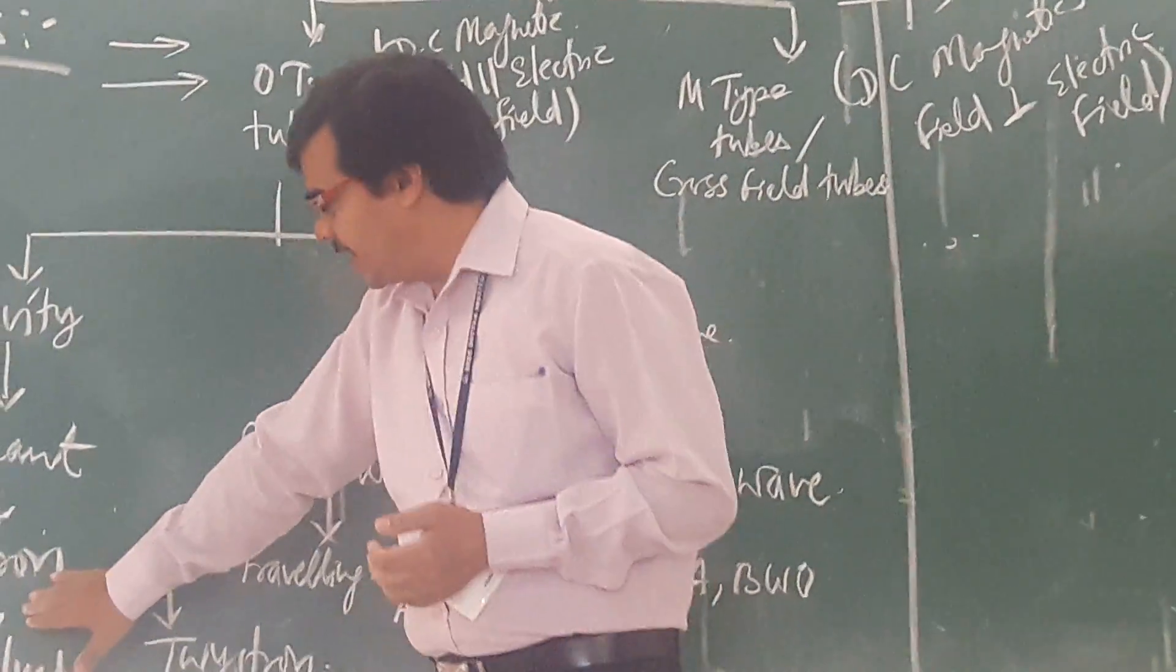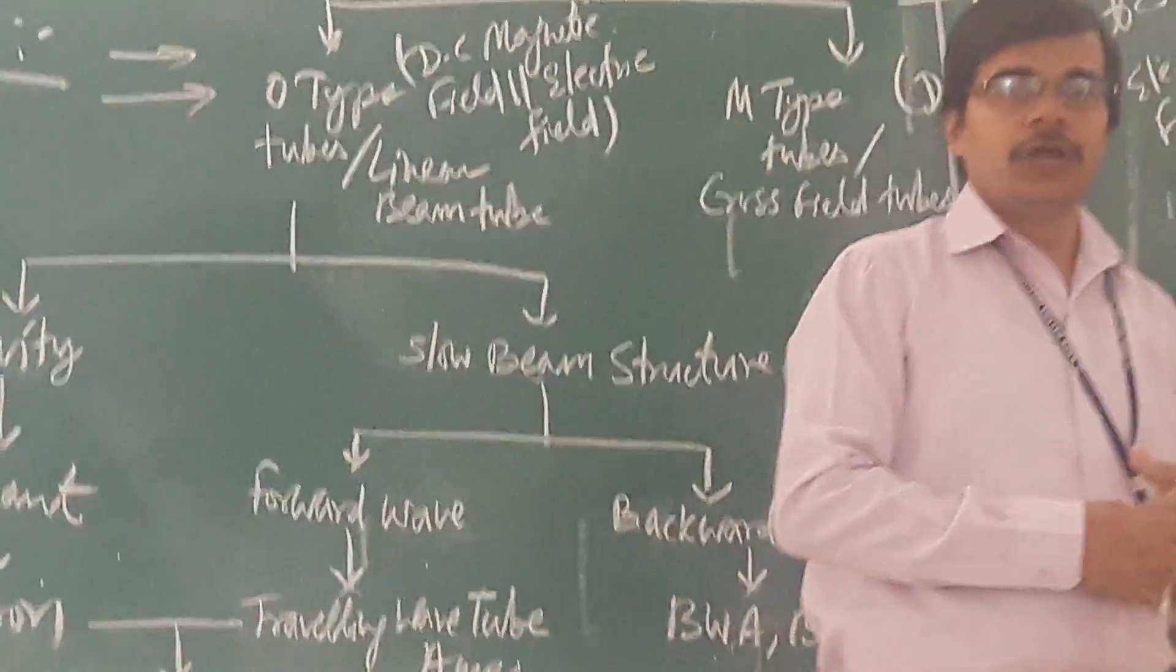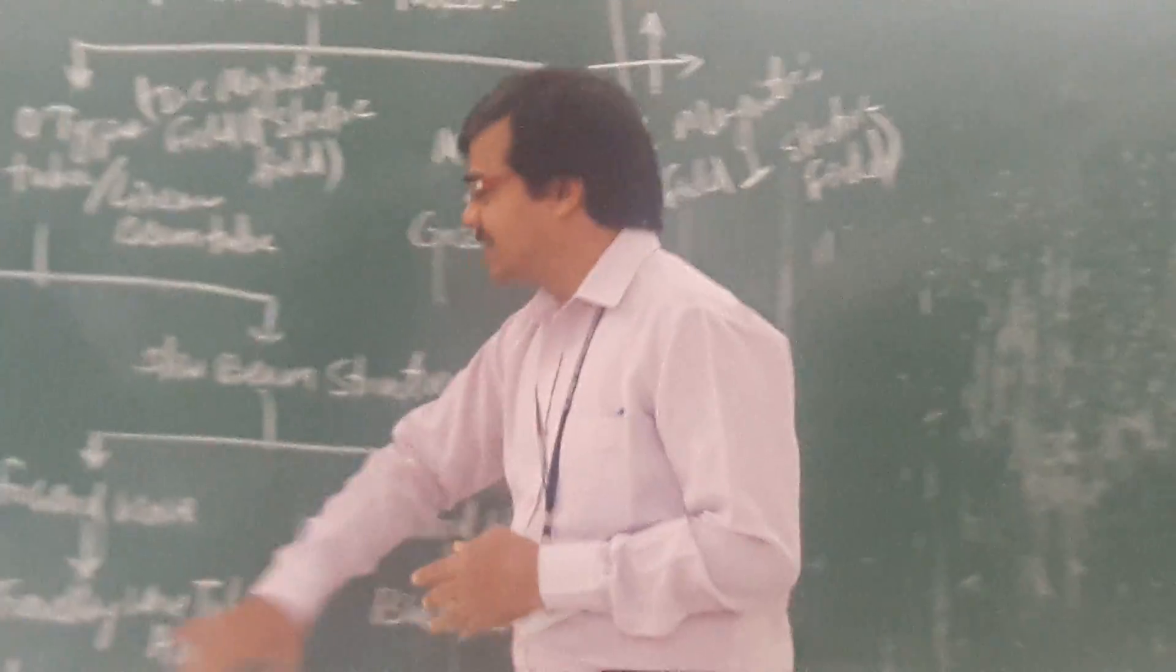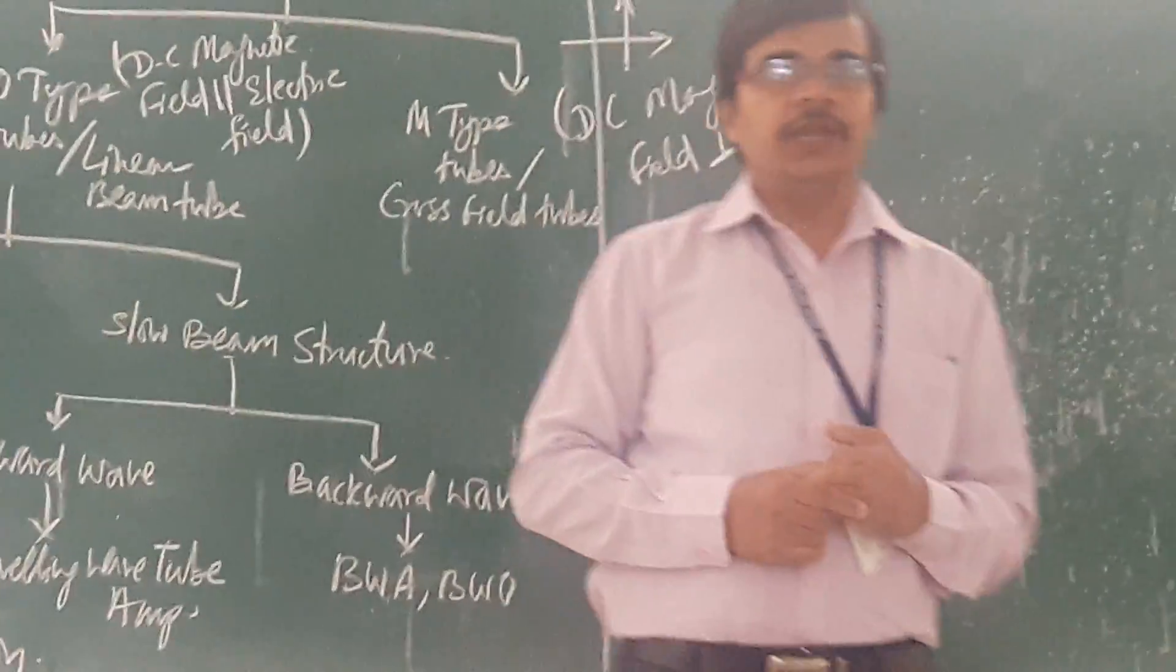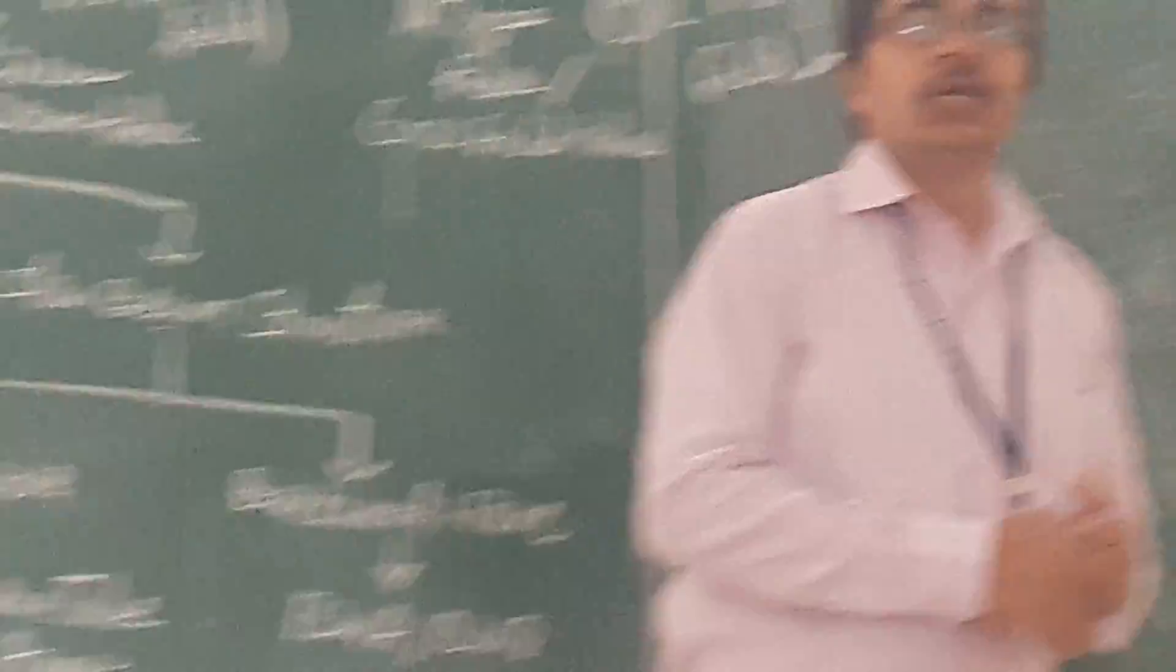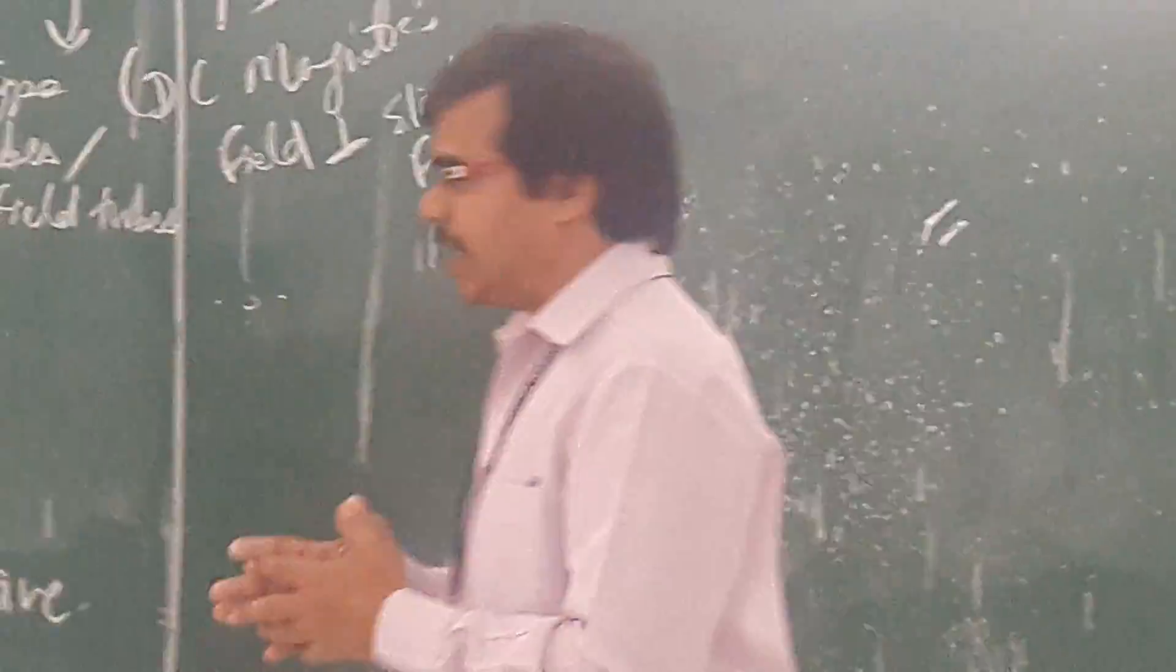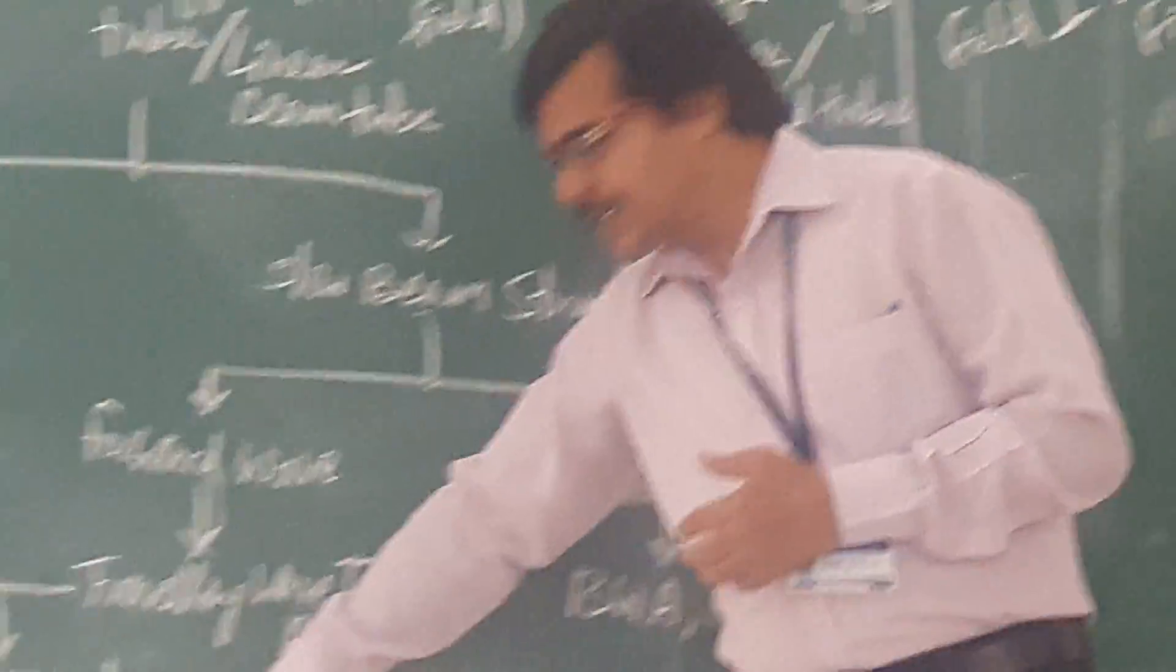Now, if you are seeing your klystron, your klystron. In klystron, what you are having, reflex klystron. So, reflex klystron is an oscillator. One you are having, that is the hybrid between your klystron and traveling wave tube. That is your twystron. So, twystron is an amplifier. So, it is having the property of your both klystron and traveling wave tube. And we are using it as an amplifier.